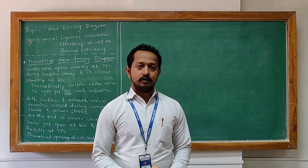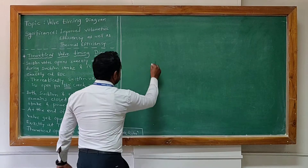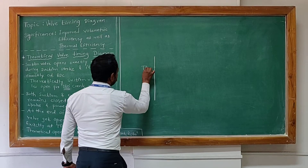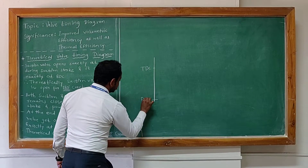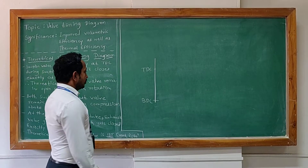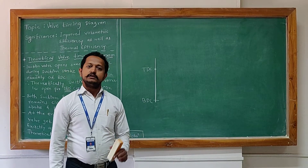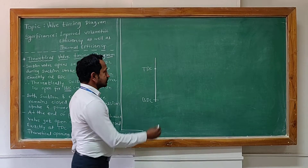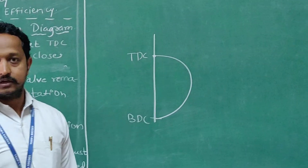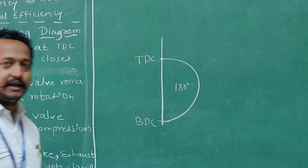First we will discuss the theoretical Valve Timing Diagram. Theoretically, the valves are open. I will mark TDC and BDC, which will show us the two dead centers. Theoretically, every cycle starts with a suction stroke. The suction stroke starts at TDC and it should close at BDC, so it will have a theoretical opening of 180 degrees crank rotation.